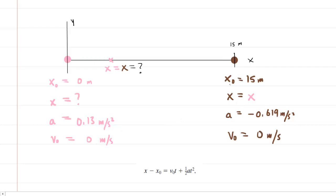For the sled we list similar information. The sled's initial x coordinate is 15 meters because we were told the sled is 15 meters away from the girl. The final x coordinate of the sled will be the same as the final x coordinate of the girl, because the two objects are going to meet at the same location.